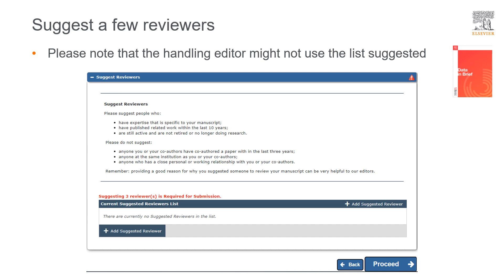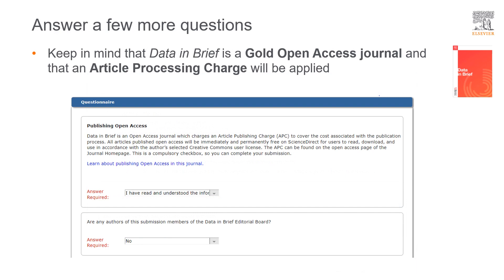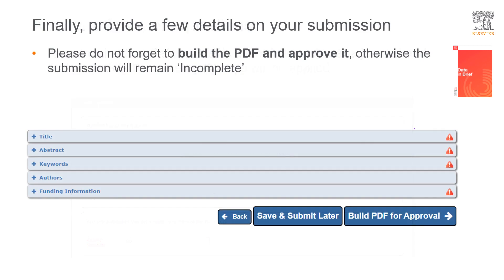You will then be asked to suggest a few reviewers. This is a required section for submission; however, please note that the handling editor might not use the reviewers you suggested. You will also be asked to answer a few questions. Please remember that Data in Brief is a gold open access journal and thus an article processing charge is applicable in case of acceptance. Finally, you will be asked to provide additional relevant information in a few key sections. Please do not forget to build your PDF for approval — if you do not, your submission will remain incomplete and you will receive a reminder to complete it.